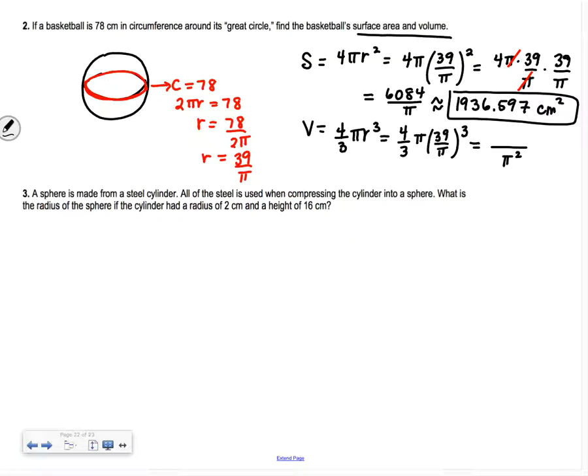We have 39 cubed times 4 divided by 3, so 79,092/π² times 1, which if you find the decimal approximation is 8,013.695 centimeters cubed.